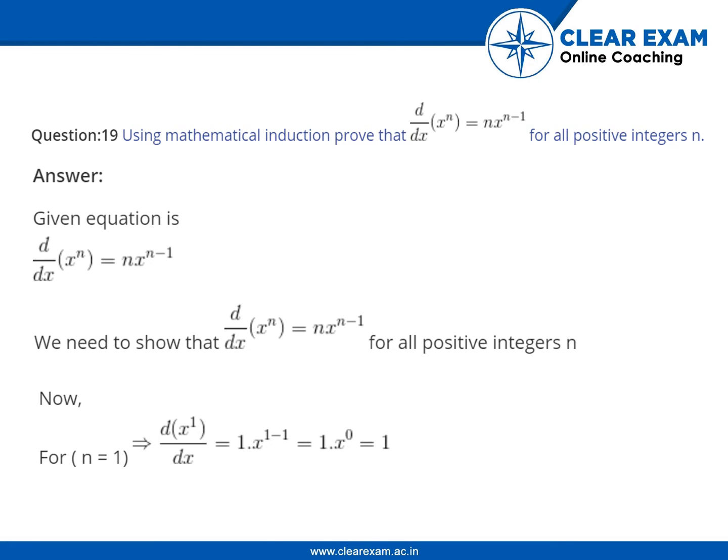Now, for n is equal to 1, this gives d by dx of x to the power 1 is equal to 1 into x to the power 1 minus 1, that is 1 times x to the power 0, that is equal to 1. Hence true for n is equal to 1.